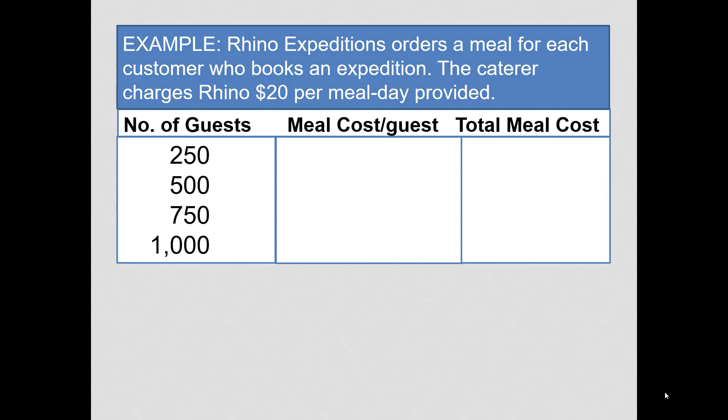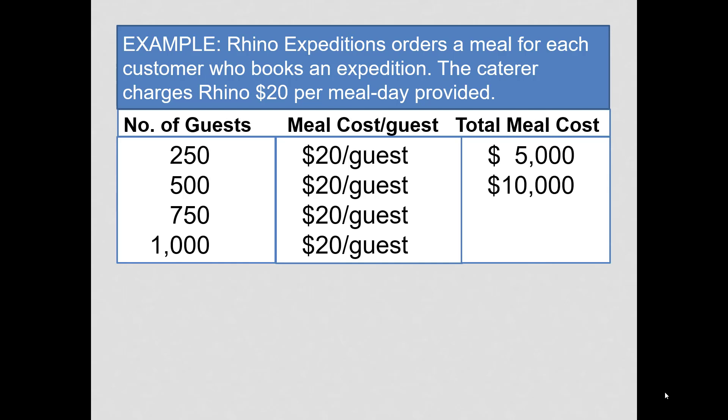Notice that the caterer will charge $20 per meal day regardless of the activity within this range of activity. So, the meal cost per guest remains constant at $20. The total meal cost will be $5,000 if 250 guests go on an excursion and $10,000 if we double our number of guests to 500. So, notice that the activity doubled and the total cost doubled. At 750 guests, $15,000 of cost and 1,000 guests, $20,000 of cost.